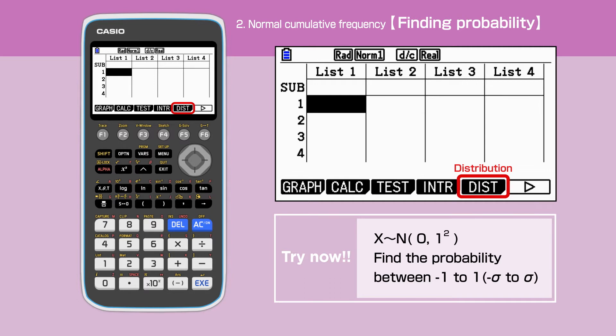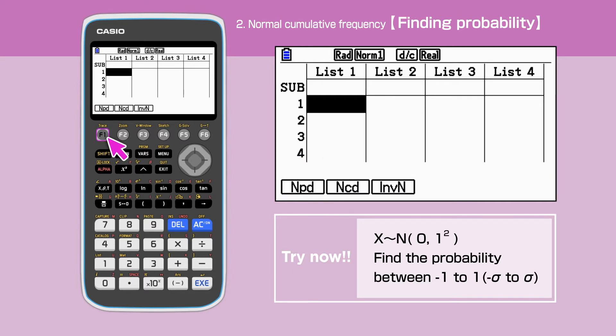Press F5 to select Distribution. Press F1 to select the Normal Distribution. We are working out the cumulative probability. Press F2 to select Normal Cumulative Distribution.